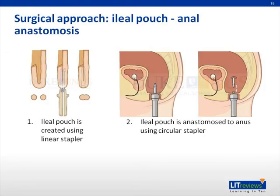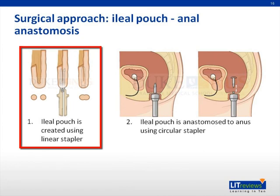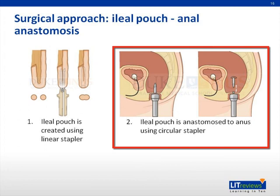This diagram illustrates the performance of an ileal pouch anal anastomosis. First, the ileal pouch is created using a linear stapler applied to the terminal ileum. Second, the ileal pouch is anastomosed to the anus using a circular stapling device.